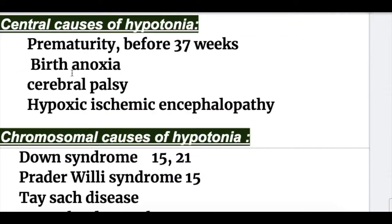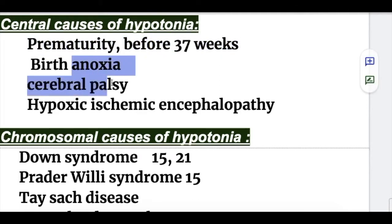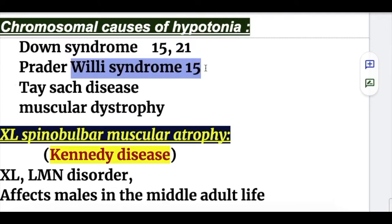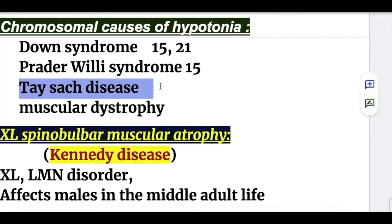Central causes of hypotonia include prematurity (birth before 37 weeks), birth anoxia, cerebral palsy, and hypoxic encephalopathy. Chromosomal causes include Down syndrome and Prader-Willi syndrome (defect in chromosome 15). Tay-Sachs disease involves deficiency of hexosaminidase, and muscle dystrophies also cause hypotonia.